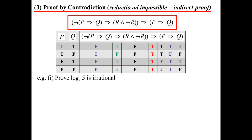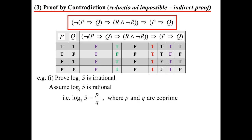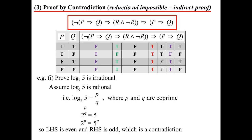Let's prove that log base 2 of 5 is irrational. Assume the opposite — that log₂5 is rational. If rational, I can rewrite it as P/Q where P and Q are co-prime, meaning they have no common factor. So 2^(P/Q) = 5, which means 2^P = 5^Q. But the left-hand side is even (an even number raised to a power is even), while the right-hand side is odd (an odd number raised to a power is odd). That's your contradiction — they can't equal each other. Hence log₂5 must be irrational.